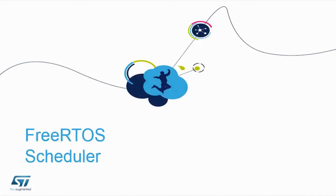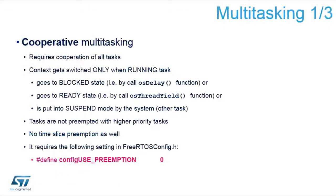Let me continue with a closer description of the scheduler and the two modes of operation. The first one is cooperative multitasking, which is a little bit special in the fact that it requires cooperation between different tasks — or between all tasks — so each task has to give up its CPU time to allow other tasks to run.